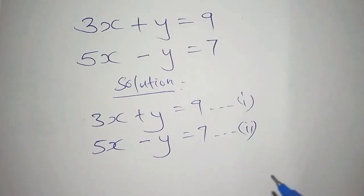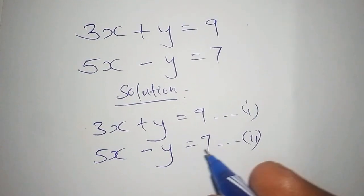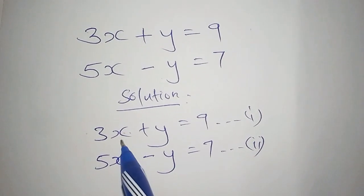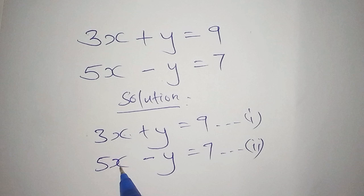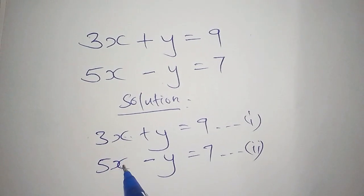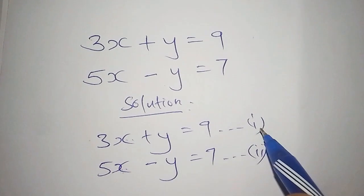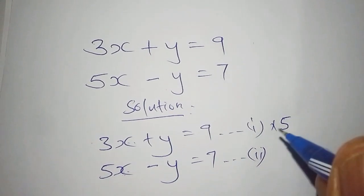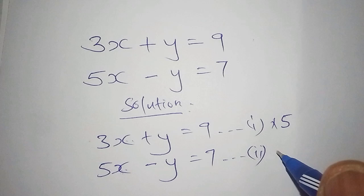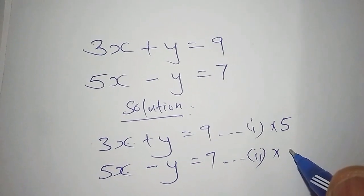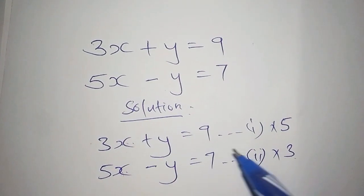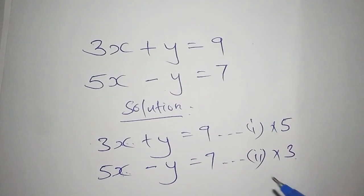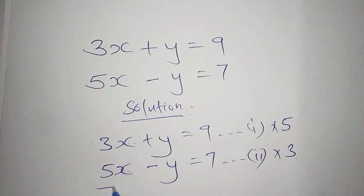So because we have these two equations, let us use the elimination method where we shall eliminate y. If we are eliminating the y, then we are going to multiply both sides — the first equation by 5, and the second equation by 3. From there we are going to have a new equation.